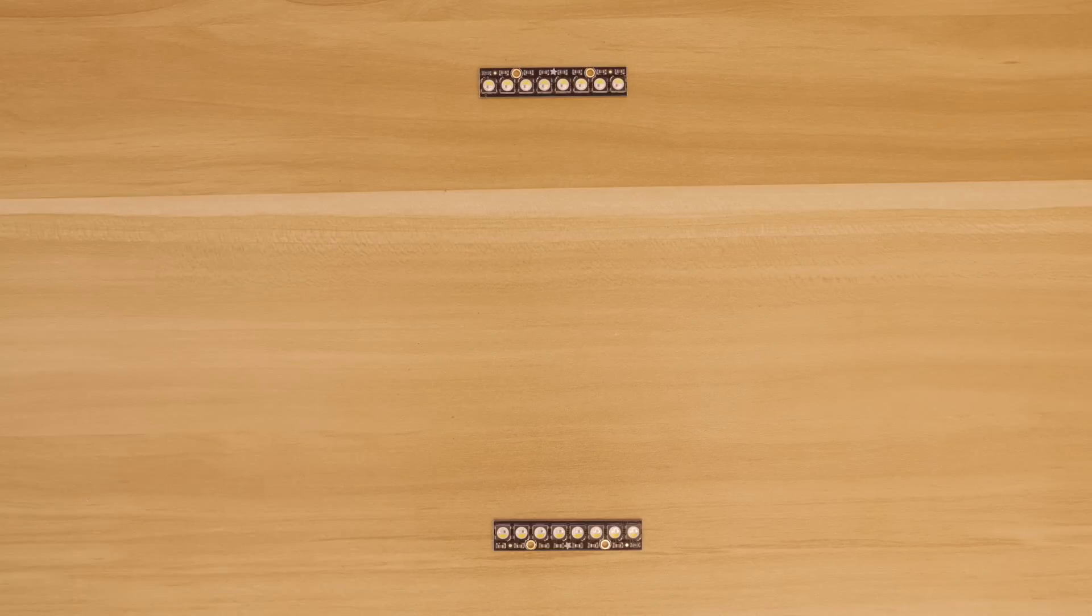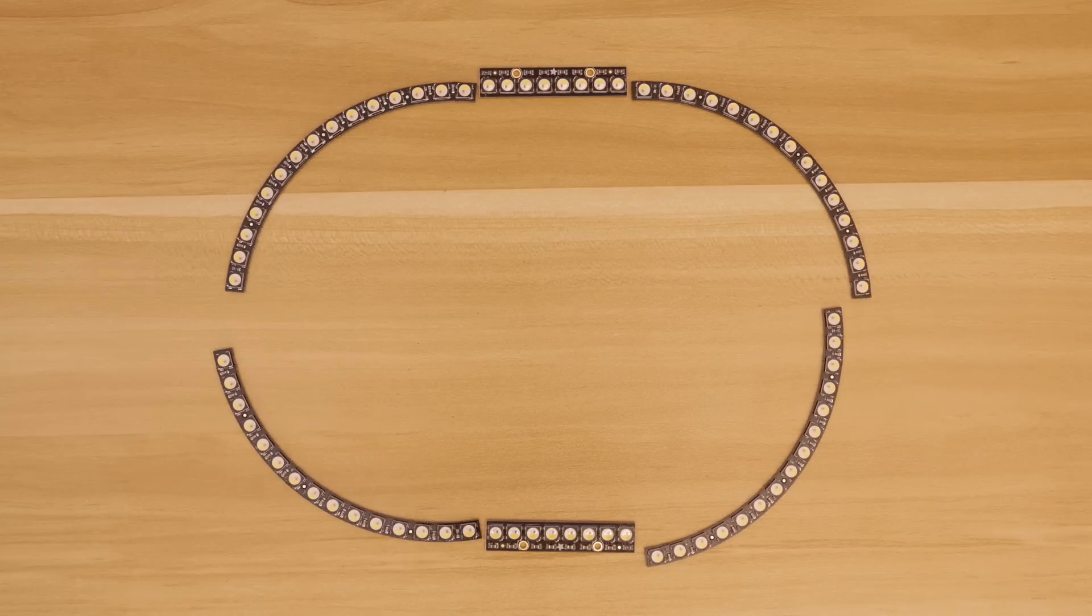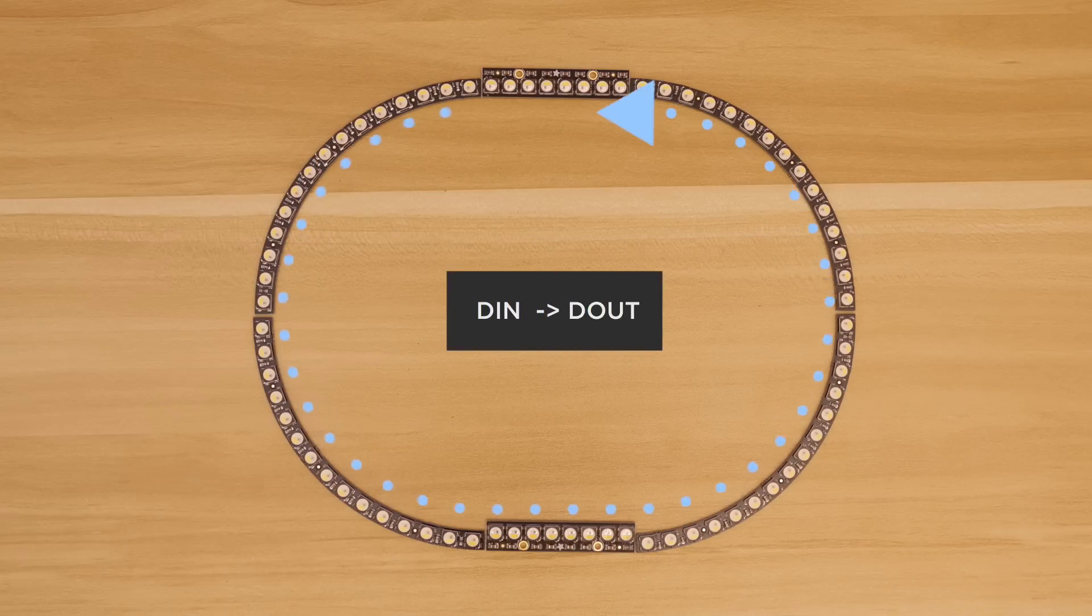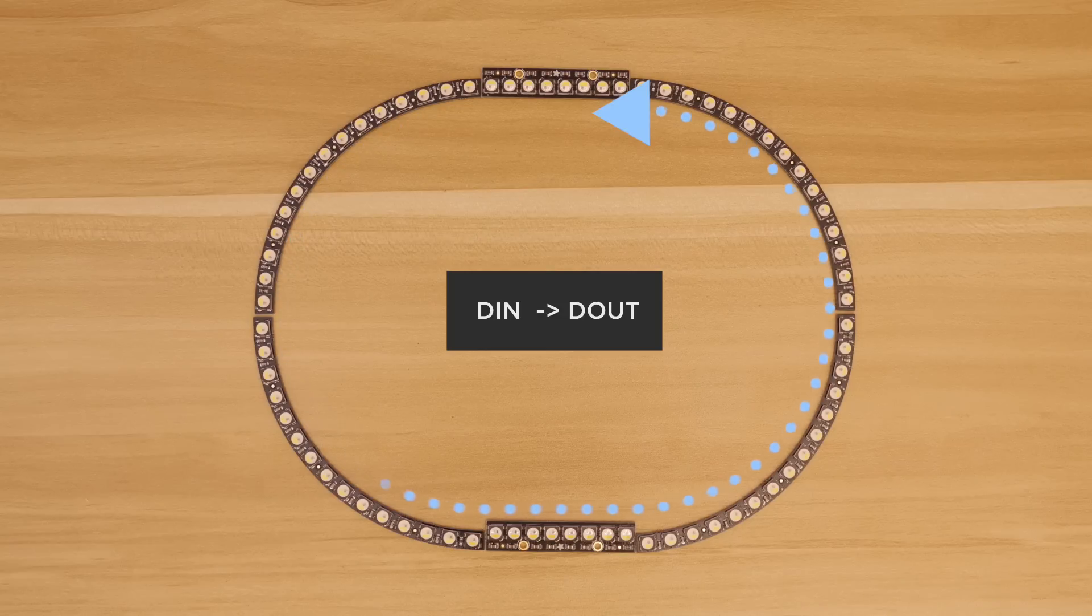By adding two NeoPixel sticks to a 60 NeoPixel ring set, we're able to make an overring that can fit over the phone. The signal from the NeoPixels can flow between different PCBs as long as the data in goes to data out.